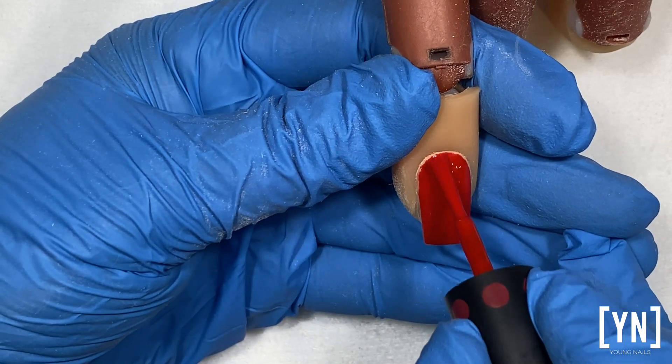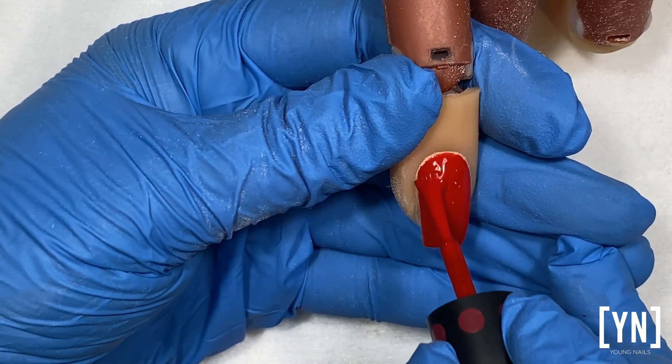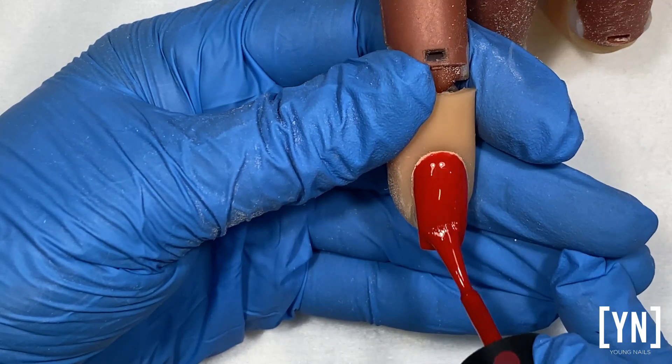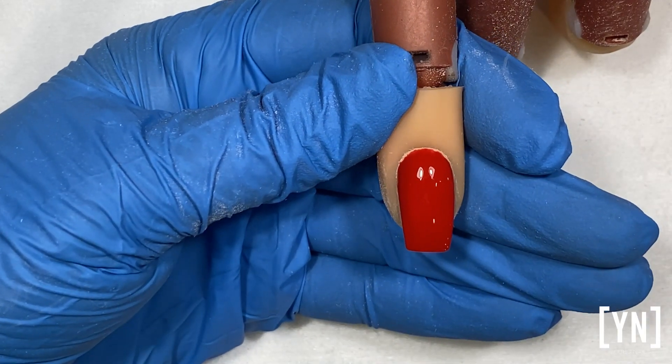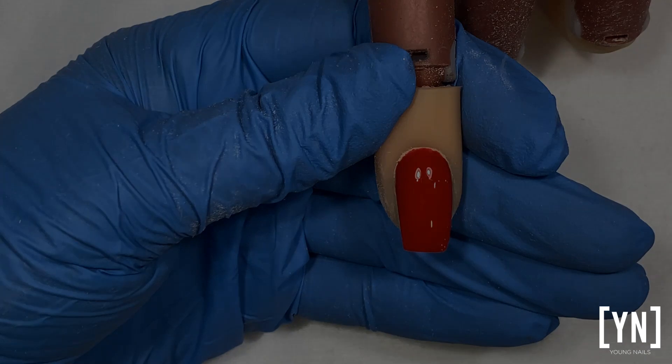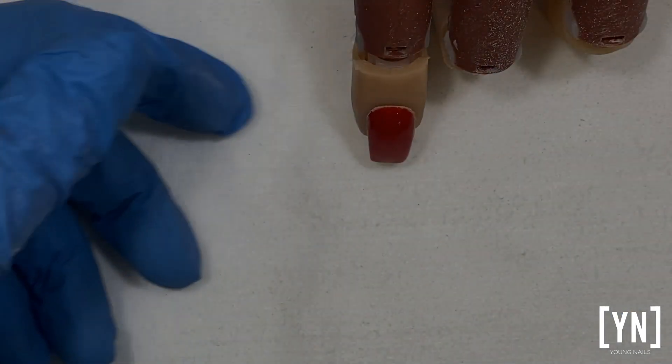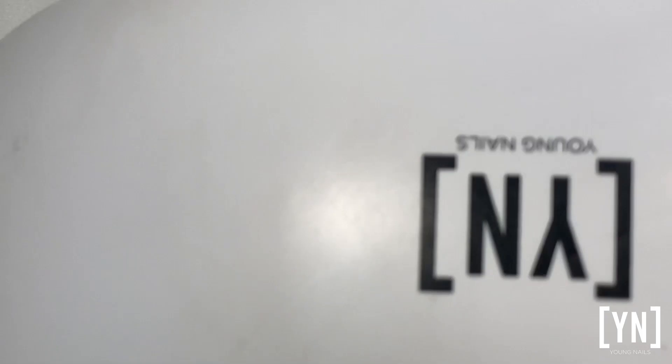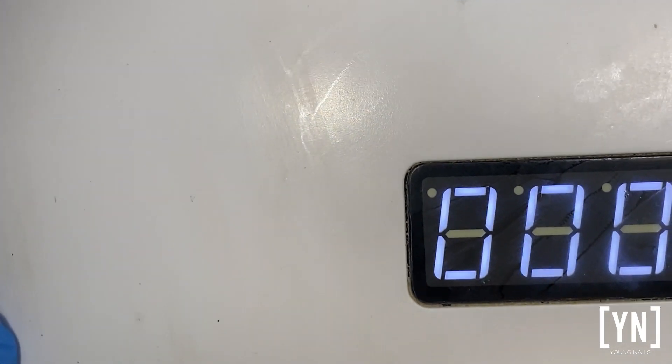Rather do two coats. With some colors you might need a third coat, it all depends on the viscosity and the color. Just keep it thin. If you don't keep your manicure thin, it will shrivel, and I'm going to cure this for a full 60 seconds.